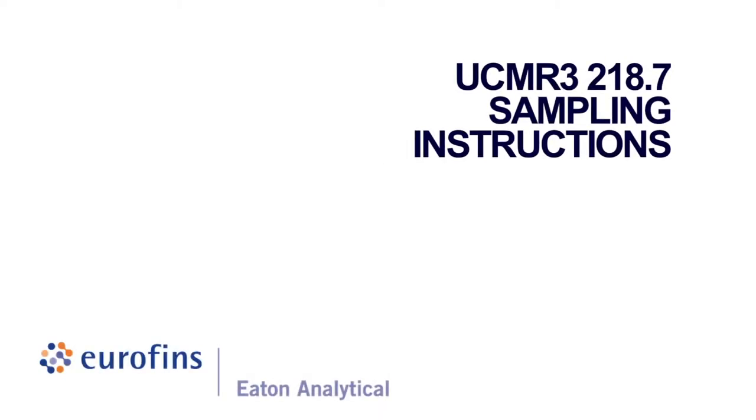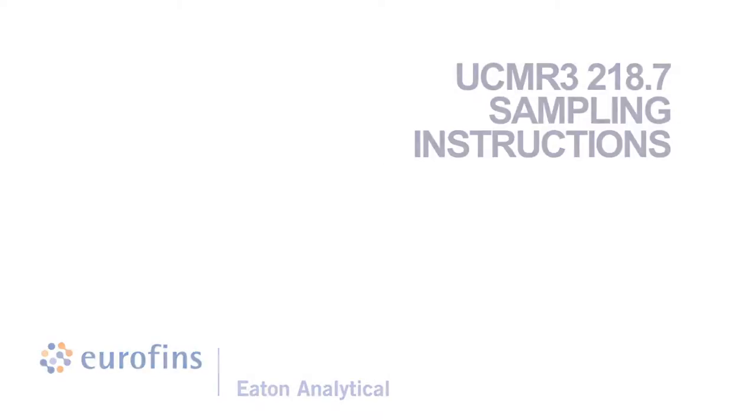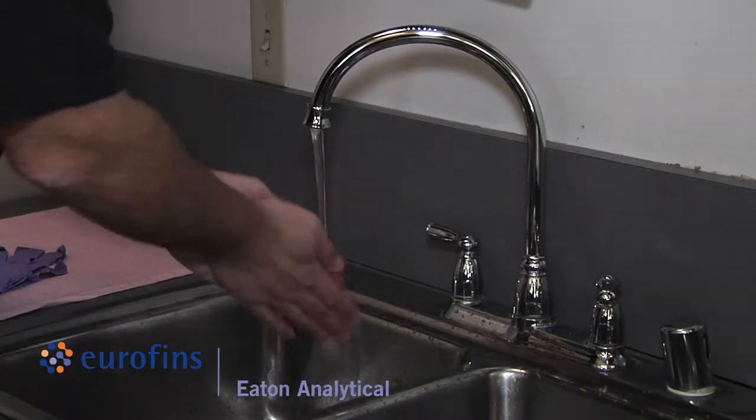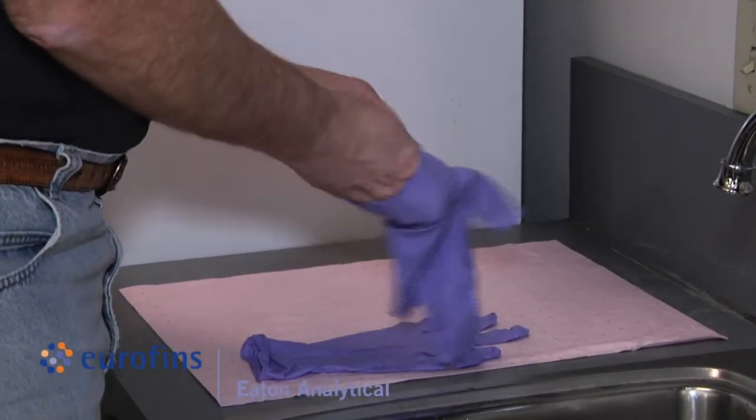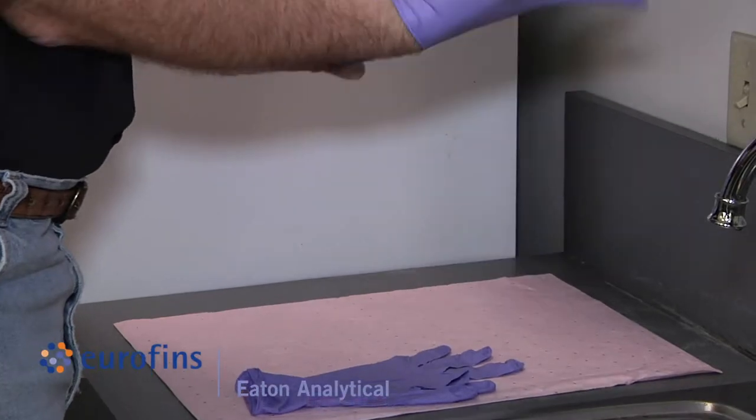UCMR 3 218.7 sampling instructions. Wash your hands before sampling and wear the powderless nitrile gloves which are included in the kit during sampling and sample handling.